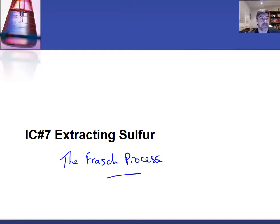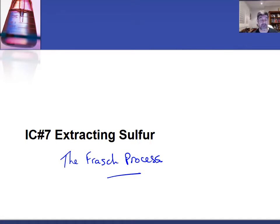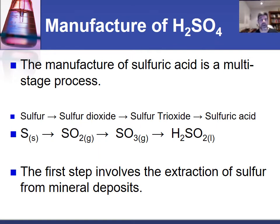In the last video we looked at some of the uses of sulfuric acid and why it's an important industrial chemical. In this video we're going to start to look at how the sequence of steps is involved in the production of sulfuric acid. You can see some of those steps in this flow diagram, where these arrows simply represent a sequence rather than specific chemical reactions.